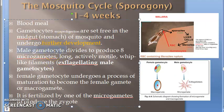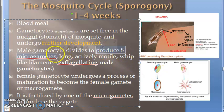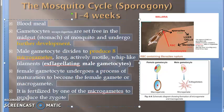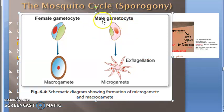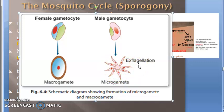Now let us see what happens to the male gametocyte. The male gametocyte produces eight micro gametes — the gametocyte becomes a gamete, a micro gamete. Here you can see one male gametocyte becoming eight micro gametes: one, two, three, four, five, six, seven, eight. They gain motility. A female gametocyte becomes a macro gamete — just one.